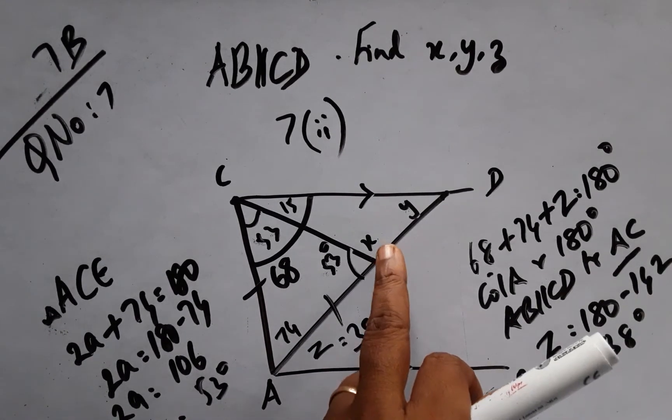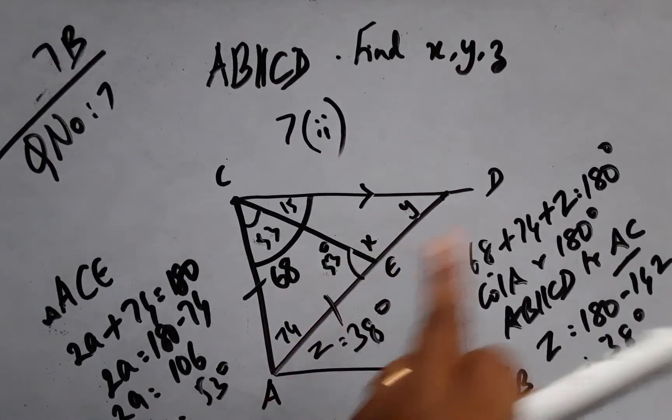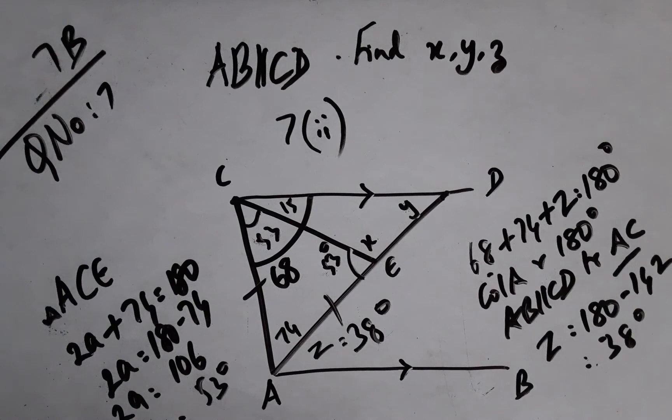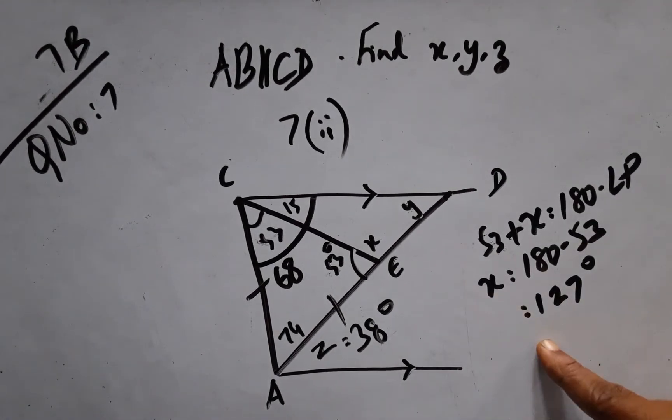Now comes the X value. 53 plus X becomes the linear pair on line AED. Therefore, 180 minus 53 is my X value. So here forms my linear pair, and my X is 127.